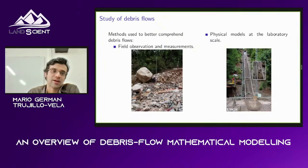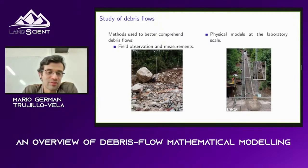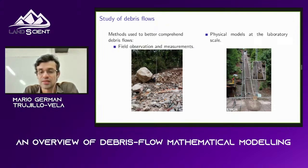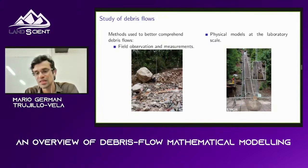Like other natural phenomena, there are three ways to study these events. The first is field observations and measurements. The second is physical models at the laboratory scale — for example, the figure on the right shows a flume 100 meters in length where experiments have been performed at the U.S. Geological Survey, collecting data from many debris flow experiments.